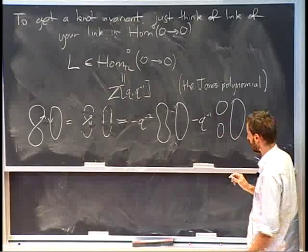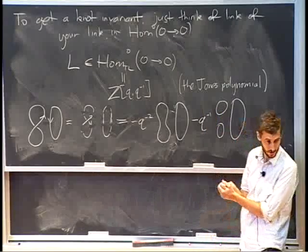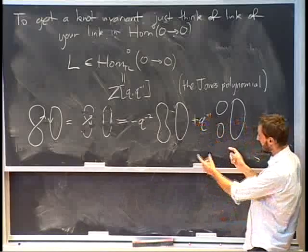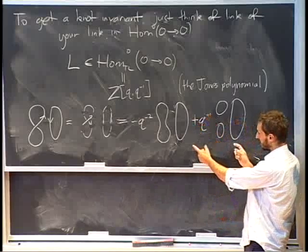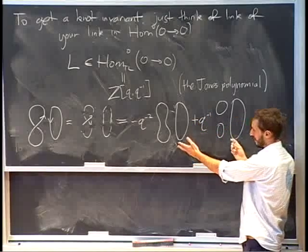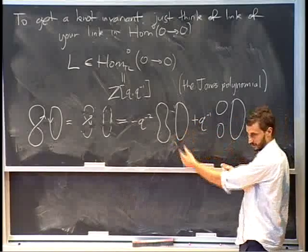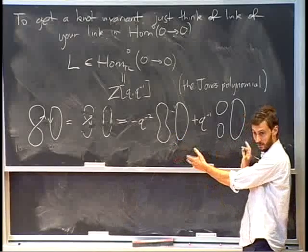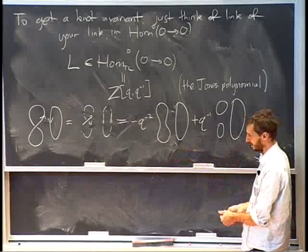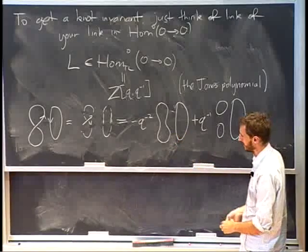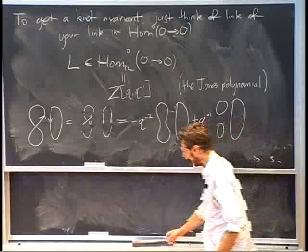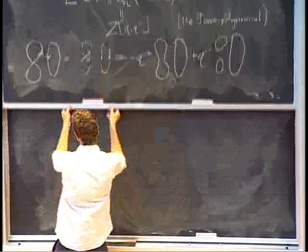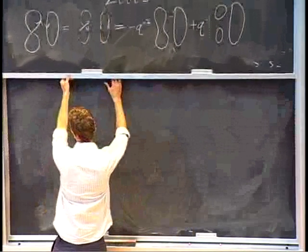So this is a negative crossing, so we use that rule — rotating our heads by 90 degrees sideways. This gives negative Q to the minus 2 times that element of Temperley-Lieb, minus Q inverse times this element. Then we take both diagrams and replace the circles with Q plus Q inverse, ending up with some Laurent polynomial in Q.